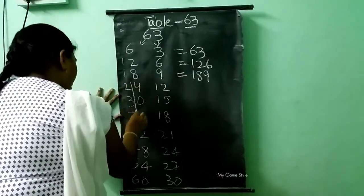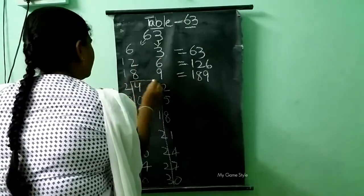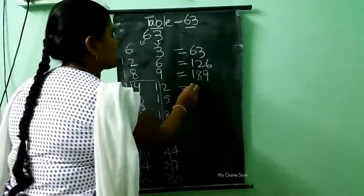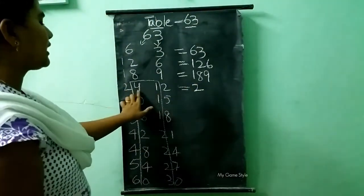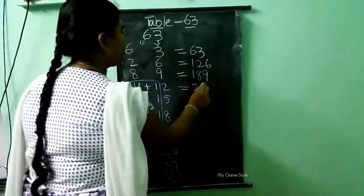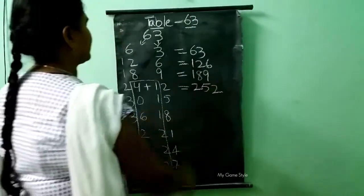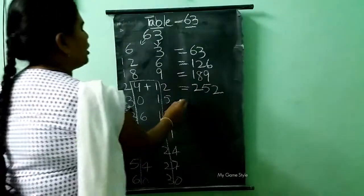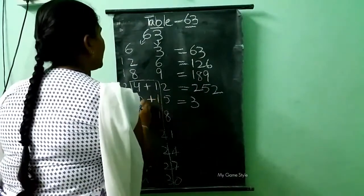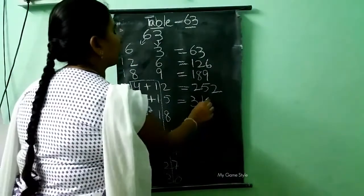Here we need to draw a line. Then here it is 2, so we write 2 as it is. Next we need to add these both numbers: 4 plus 1 — how much, children? 5. Then here 2 is there, so we write 2 as it is. And next we have 3, so we write 3 as it is. Then 0 plus 1 — how much? 1. Here 5 is there, so we write 5 as it is.